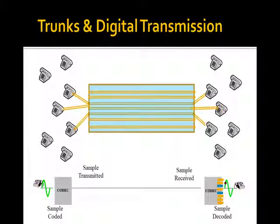In this transmission system, there is no packet and there is no framing — it's just a stream of 8-bit samples, one after the other. There is nothing to separate the samples; it just starts running. Which means there's no signaling. So we've got a problem: I've solved my attenuation and my noise problem, but now I can't tell you what the status is of the other end.